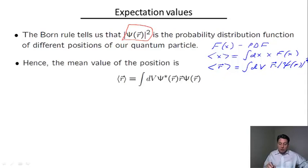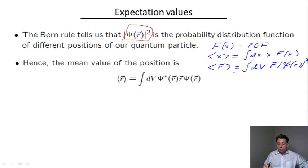We can rewrite this definition because the absolute value of ψ squared is simply ψ* times ψ of r.